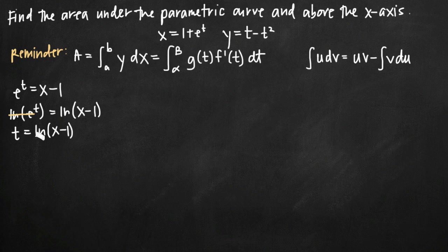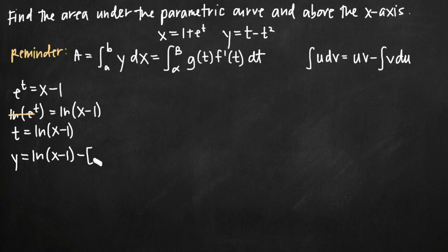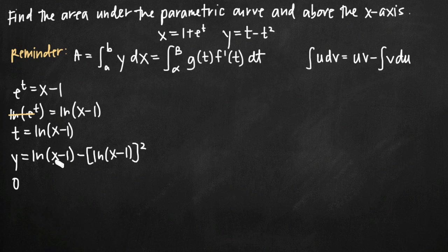Now that we've solved for t, we plug natural log of x minus 1 into our equation for y. We get y equals natural log of x minus 1 minus the quantity natural log of x minus 1 squared. At this point we want to set this equation equal to zero, because we're looking for points of intersection between this curve and the x-axis.